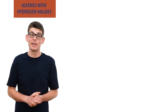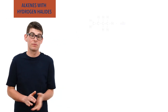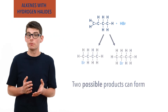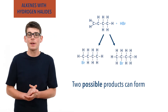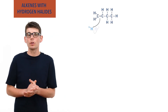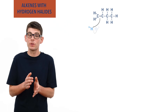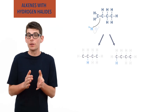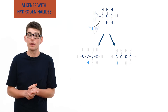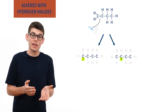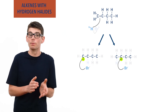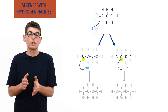If an unsymmetrical alkene is reacted with a hydrogen halide, such as hydrogen bromide, then there may be two possible products that can be formed. During the first step of the mechanism, when the carbon-carbon double bond breaks, the hydrogen can bond to either one of the carbon atoms from the double bond. For an unsymmetrical alkene, this means there are two possible carbocations that can be formed. In the second step, there are two possible carbons that the halide ion can bond to, giving two different possible products.